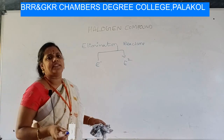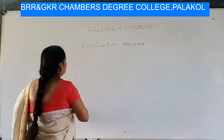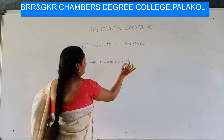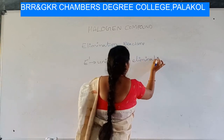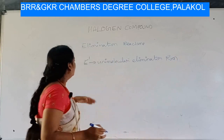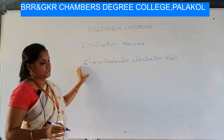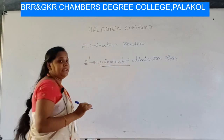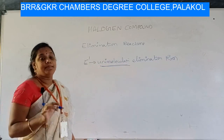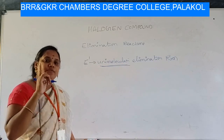In E1 — unimolecular elimination reactions — the word 'unimolecular' represents that the rate of reaction depends only on the concentration of the alkyl halide, and not on the nucleophile or reagent. It depends only on one molecule.